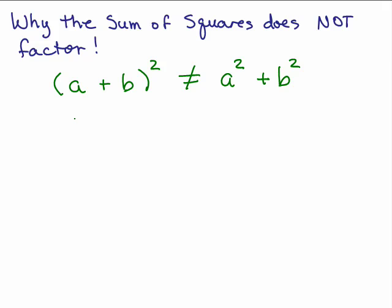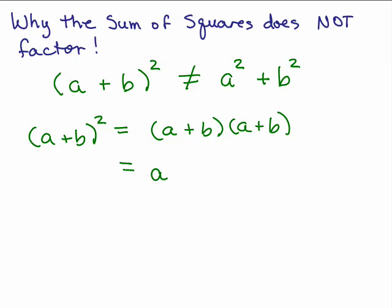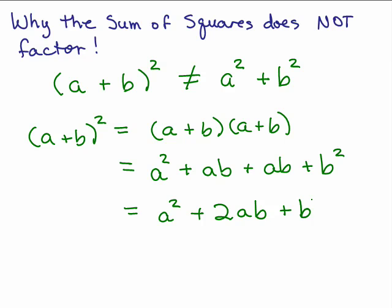So first of all, we'll start out with a plus b squared. What does that mean? It means a plus b times a plus b. And if you do the FOIL method, we have a squared plus ab plus ab plus b squared, and combining the two middle terms, that gives a squared plus 2ab plus b squared.